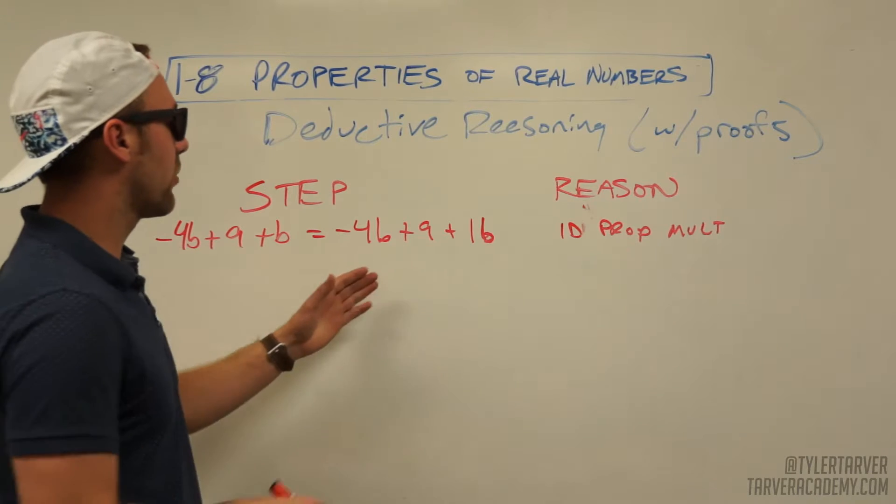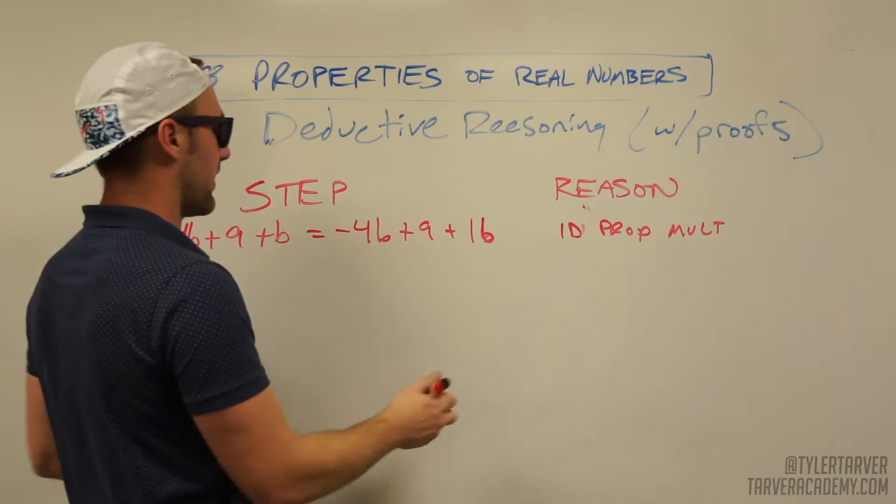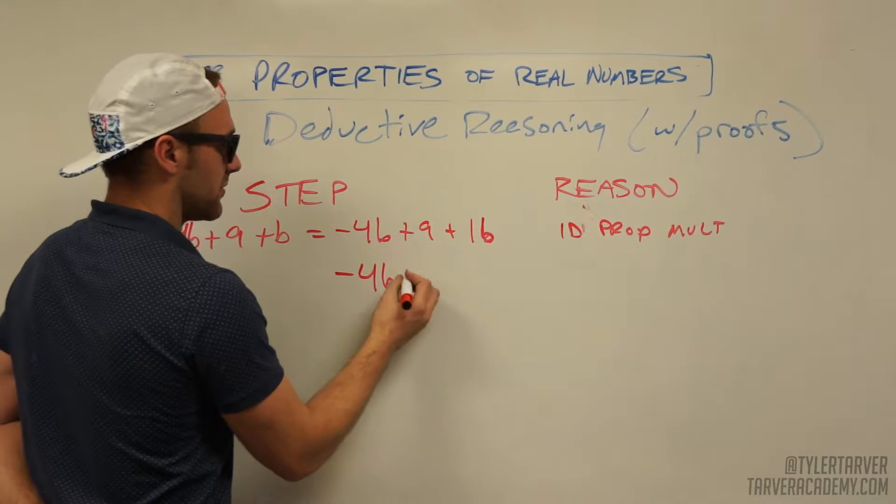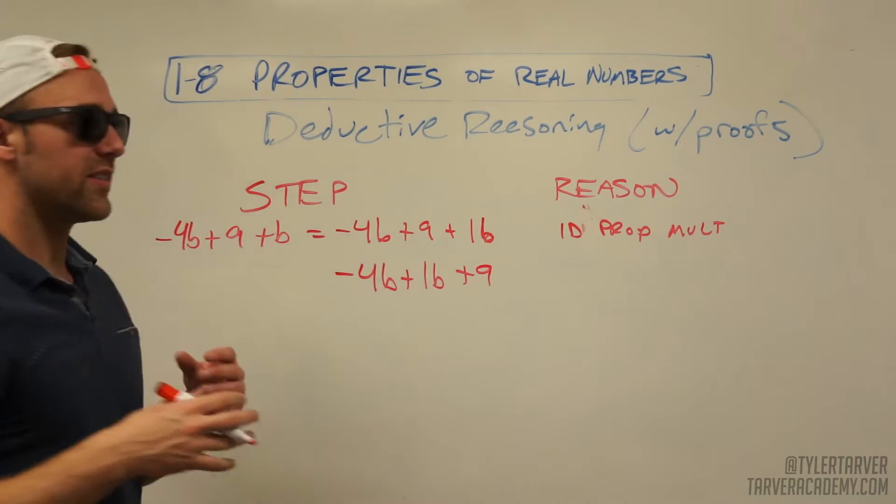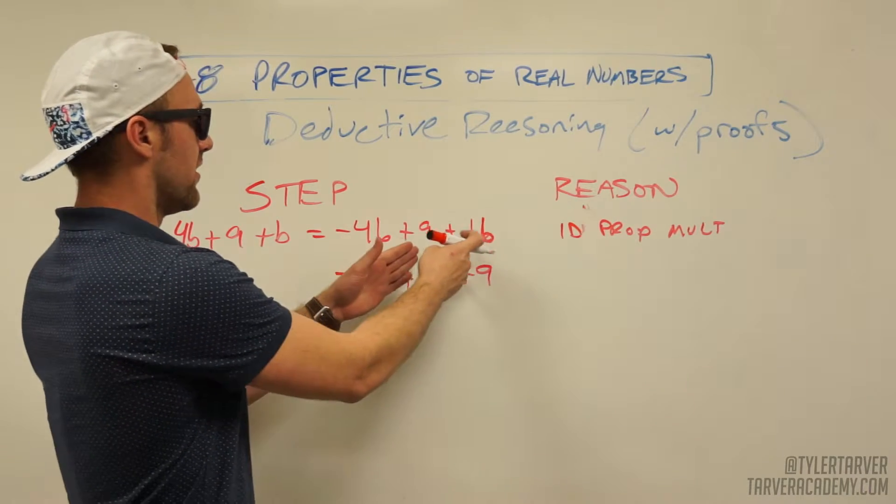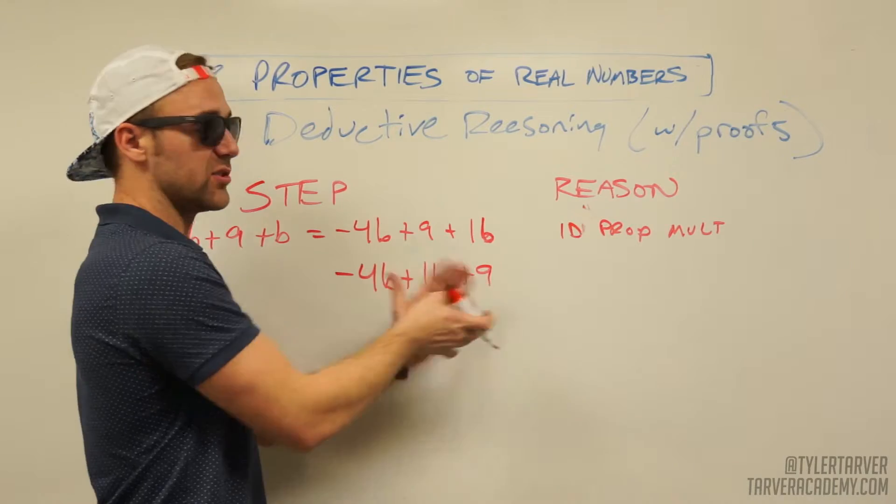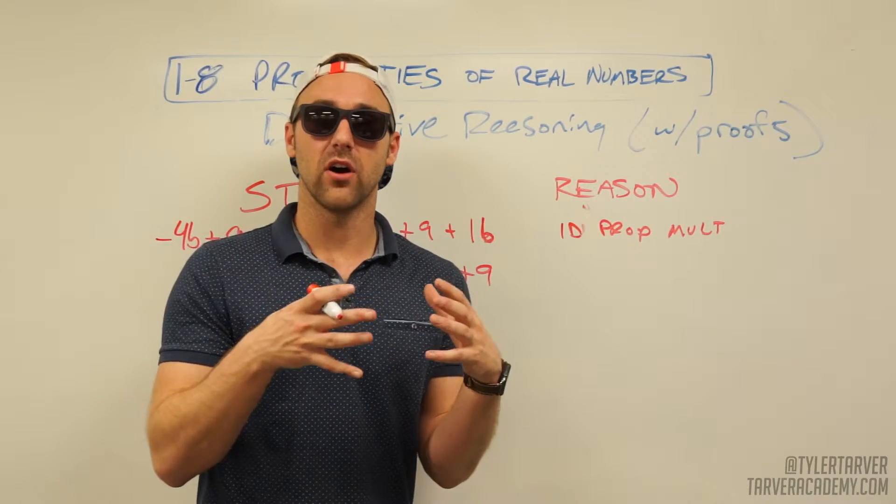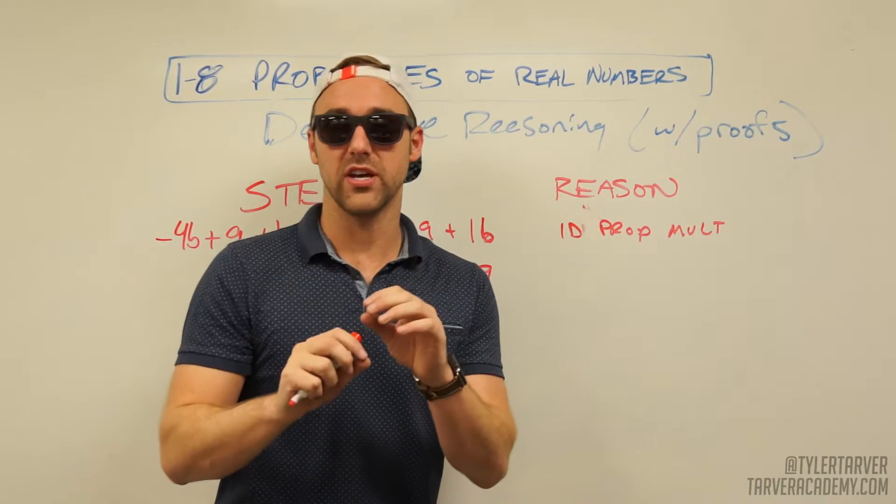Next thing I want to do is I want to reorder this. I'm going to do negative 4B, I'm going to move this plus 1B plus 9. Now I want to think what property allows me to say that 9 plus 1B is the same as 1B plus 9, switching around. We're adding, so I know addition is going to be involved and I'm just moving stuff around, so that's only moving two things around, which is commutative.